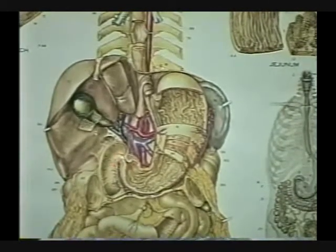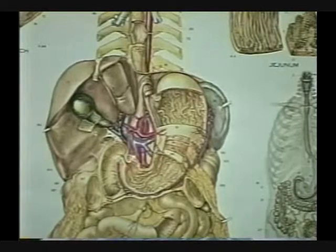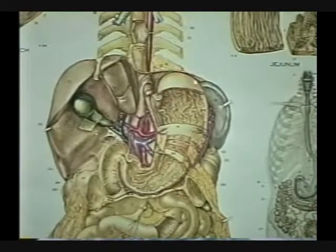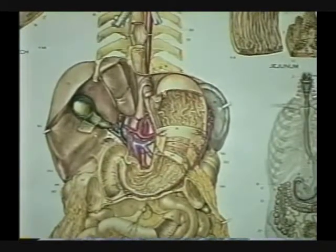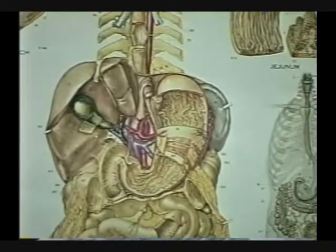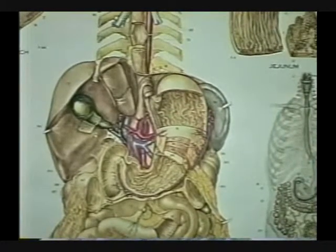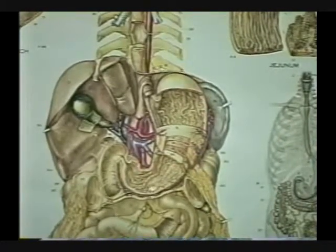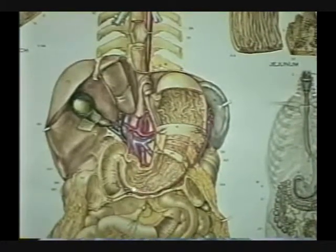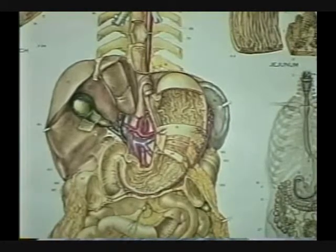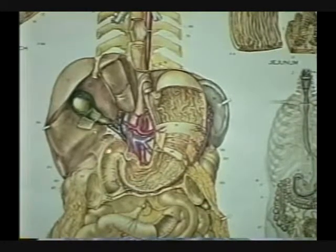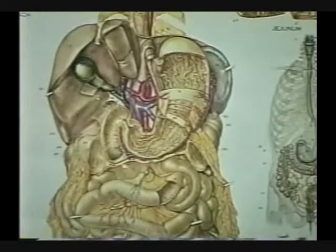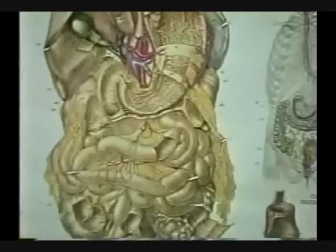The muscle controlling this opening is the pyloric sphincter. This part of the stomach is the fundus, this part is the body, and this part is the pyloric region or pylorus. And we go then into this organ, which is the duodenum.